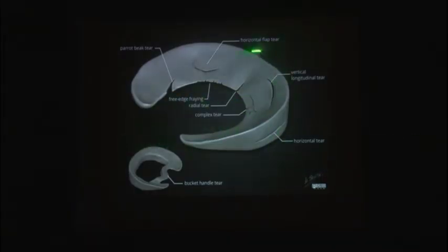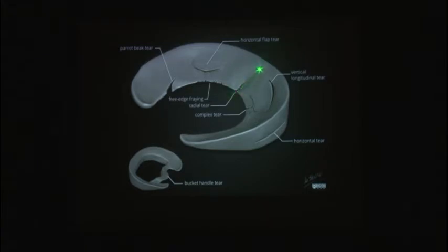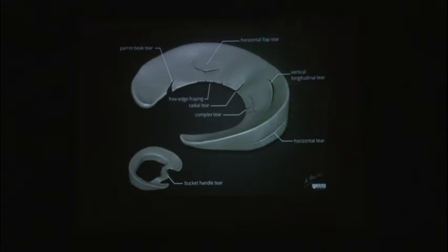This image covers all tear patterns. Vertical longitudinal tears in the red-white and red-red zones with a vertical strong construct and an intact ACL will heal well. Problems arise with complex tears or radial tears starting from the white zone and extending to the red or red-white zone in a young adult, a discoid meniscus with a complex tear pattern starting in the white zone, or a bucket handle tear in the red-white zone. Problems rarely occur with peripheral tears, especially in the presence of ACL.